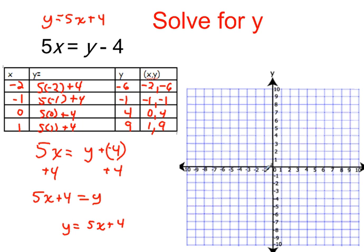So put our point at negative 2, and then down to negative 6. So there's our first point. And then we're looking at negative 1, 1. And then 0, 4. And then last, 1, 9.